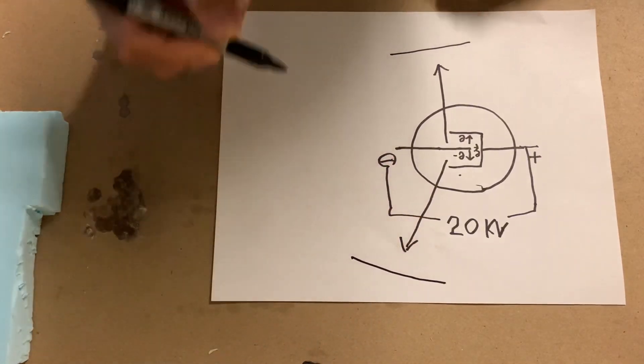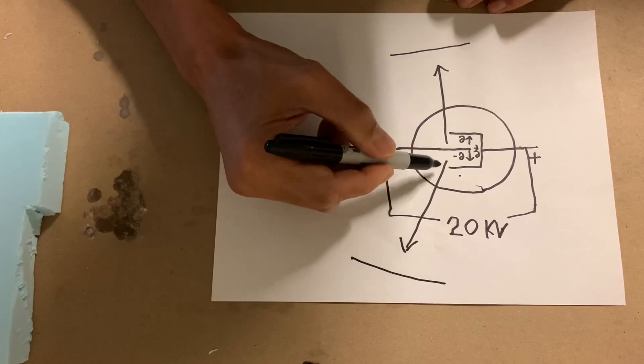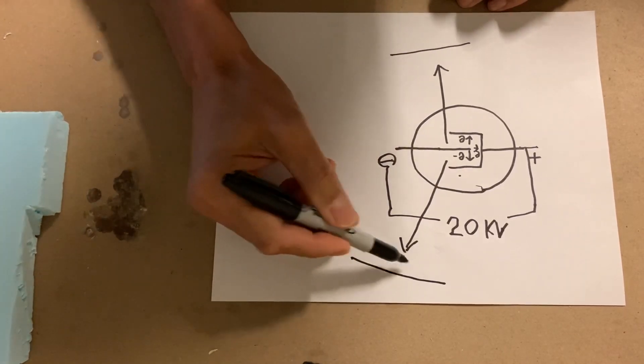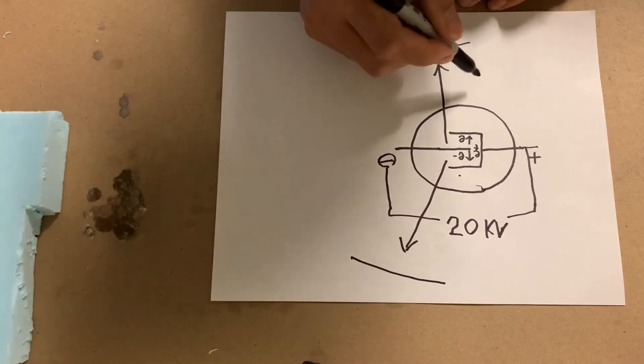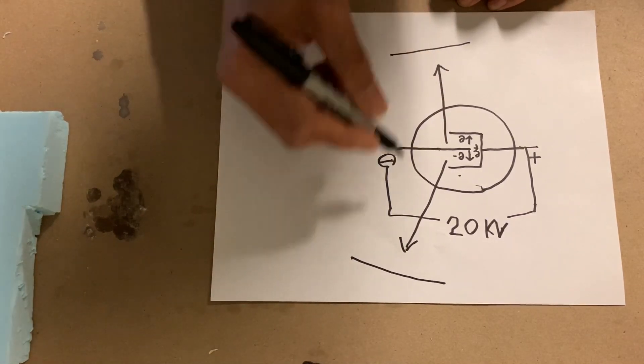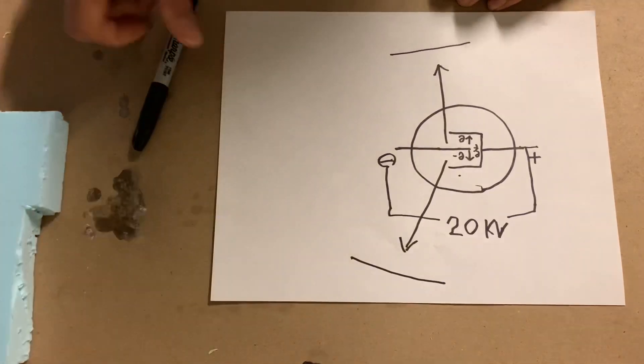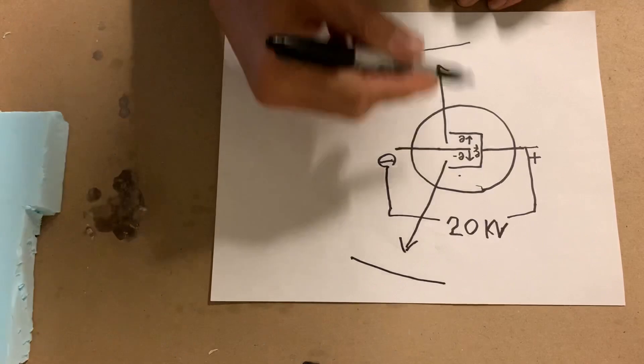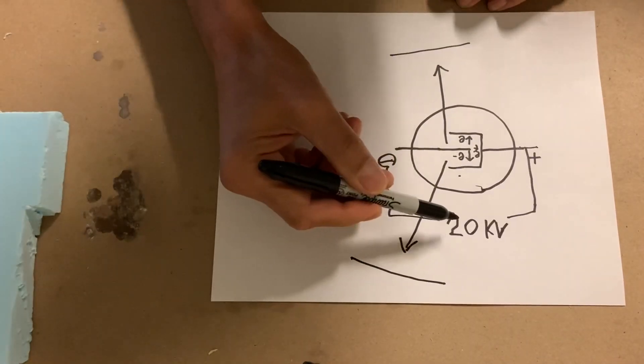So if you place a plate either here or here, you're going to be able to actually get fluorescence of the fluorescent plate. And if you put an object in between the tube and the plate you should be able to project an image, and that's how regular X-ray tubes work.